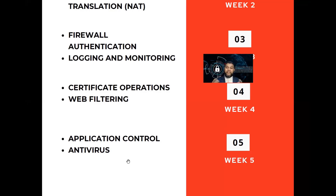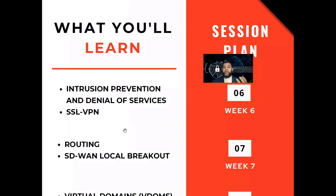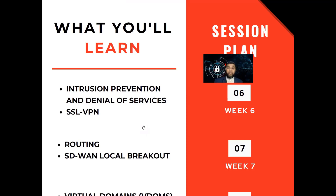When somebody is sitting inside your office and downloading a file — a PDF or executable — if it contains any malicious code or worms, we'll show how it can detect and put it into quarantine, making sure it's clean before it is sent to the user. In week six, we'll talk about intrusion prevention, denial of service attacks, and also SSL VPN. Since most users are working from home, they need secure connectivity to the office, so we'll cover how SSL VPN helps you remotely connect to your head office using encryption.